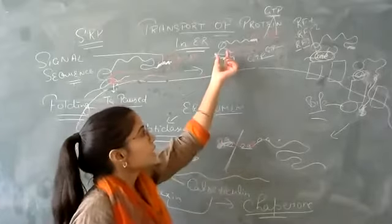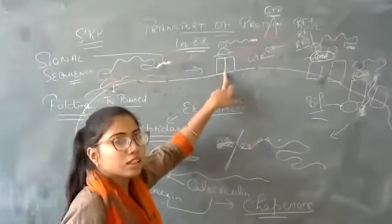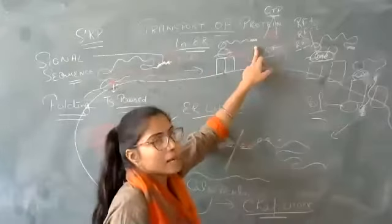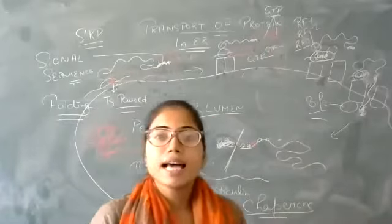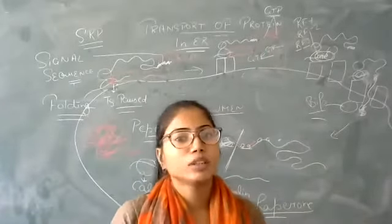As the ribosome with the protein binds to the translocon, the SRP binds with the SRP receptor. The SRP receptor is present in the ER membrane.